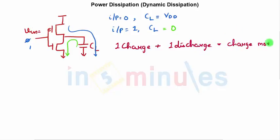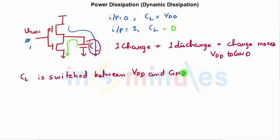So what can we say from this: one charge plus one discharge will ensure that my charge moves from V_DD to ground. So one complete cycle of charging and discharging will ensure that my charge moves from V_DD to ground. Let's say that this load capacitance C_L is switched between V_DD and ground at an average frequency of F_SW.